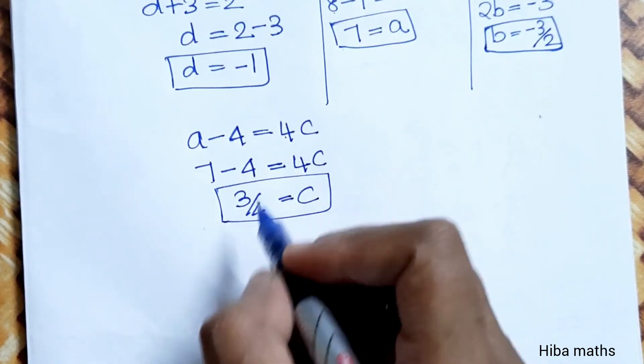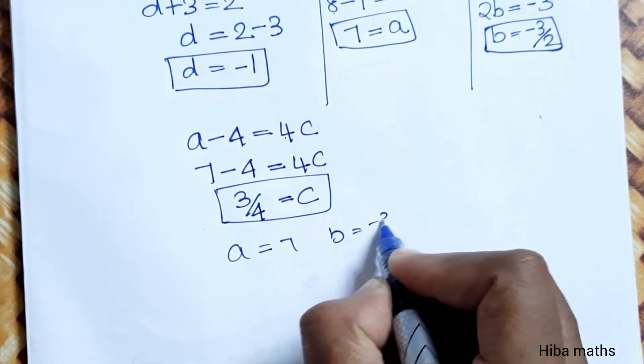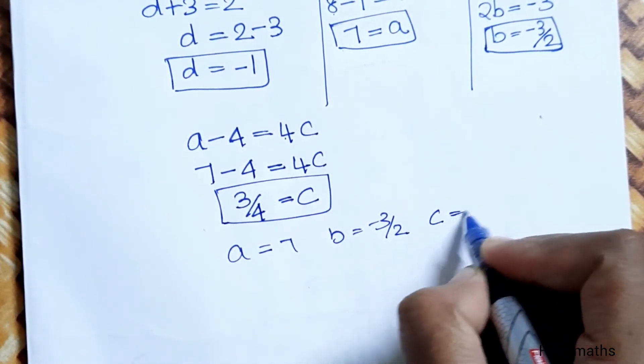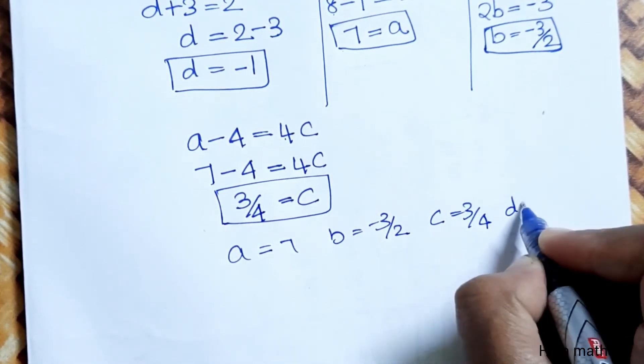C is equal to 3 by 4. So A value minus 7, B value minus 3 by 2, C value 3 by 4, D value minus 1.